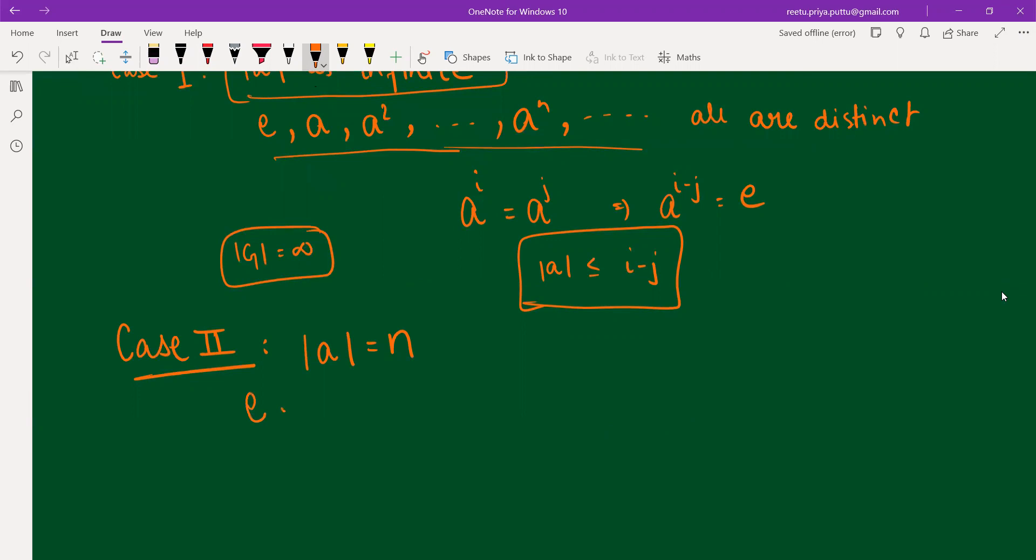So from here, I can say that identity, a, a², and up to aⁿ⁻¹, these all will be distinct. All are distinct.